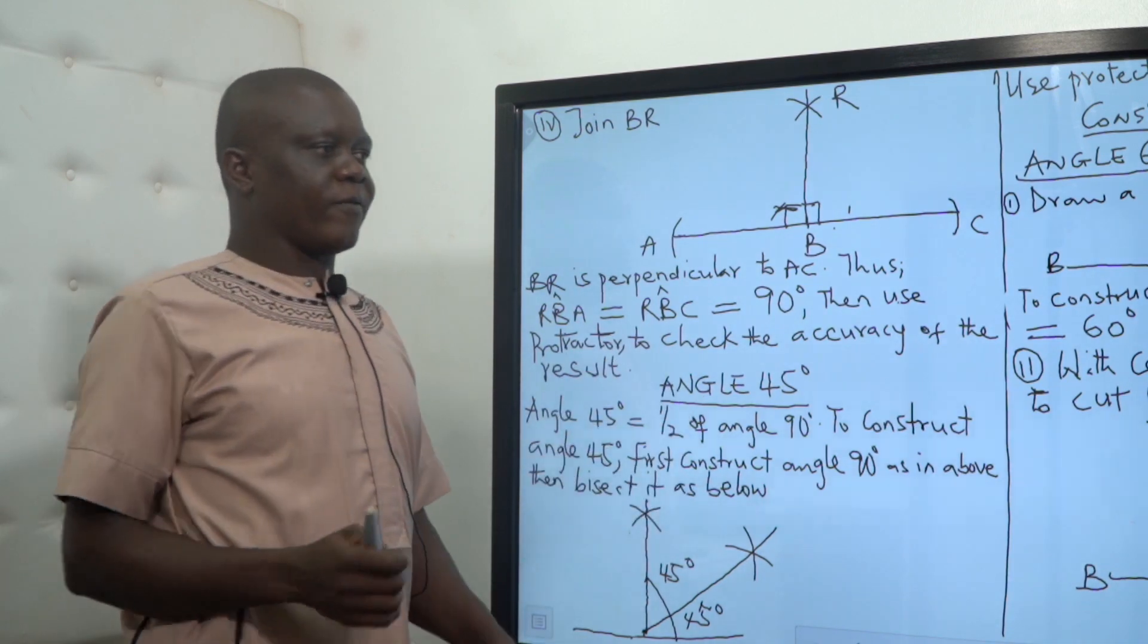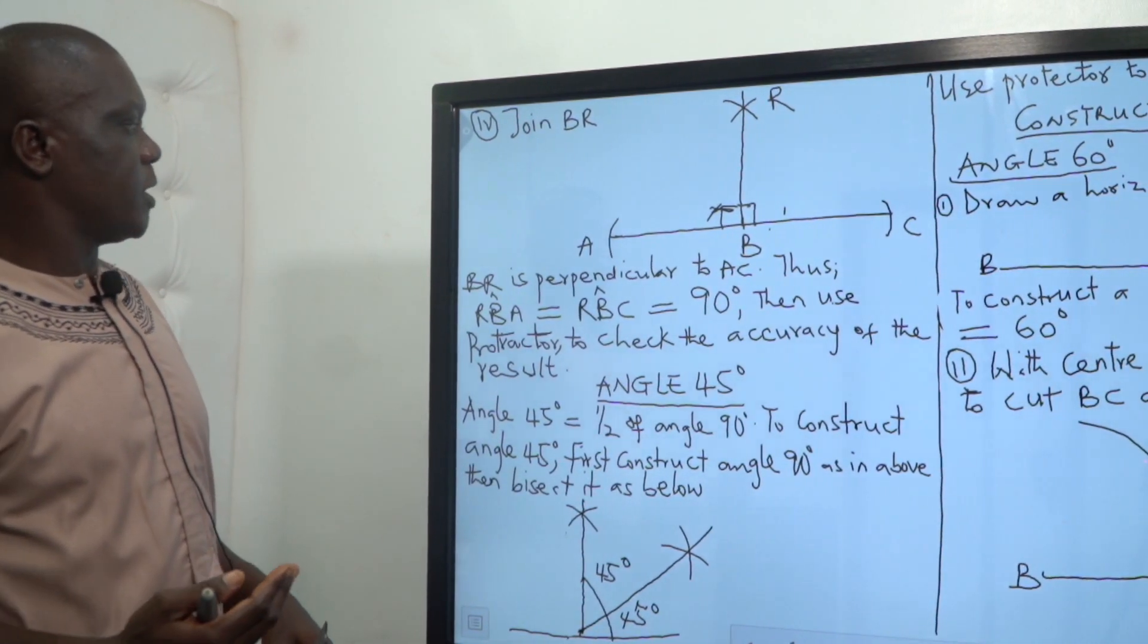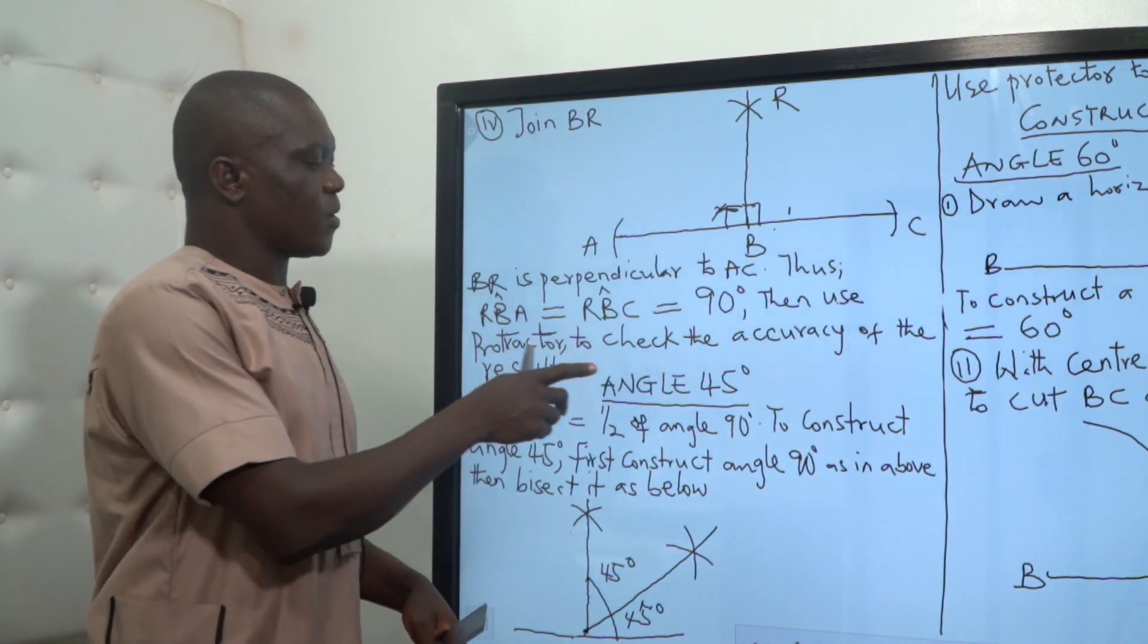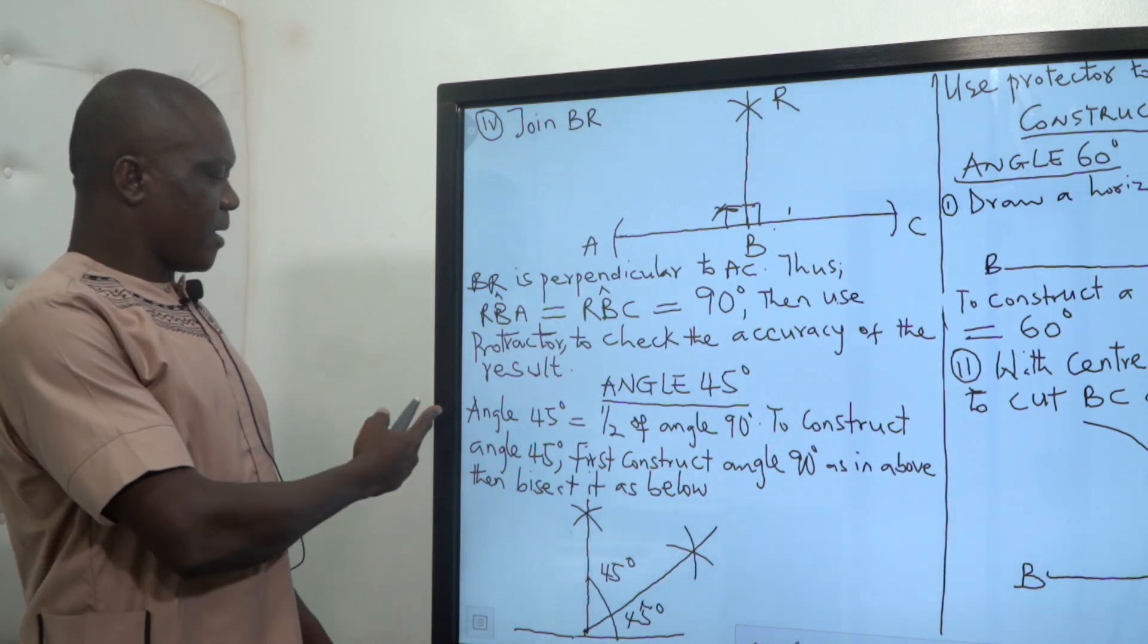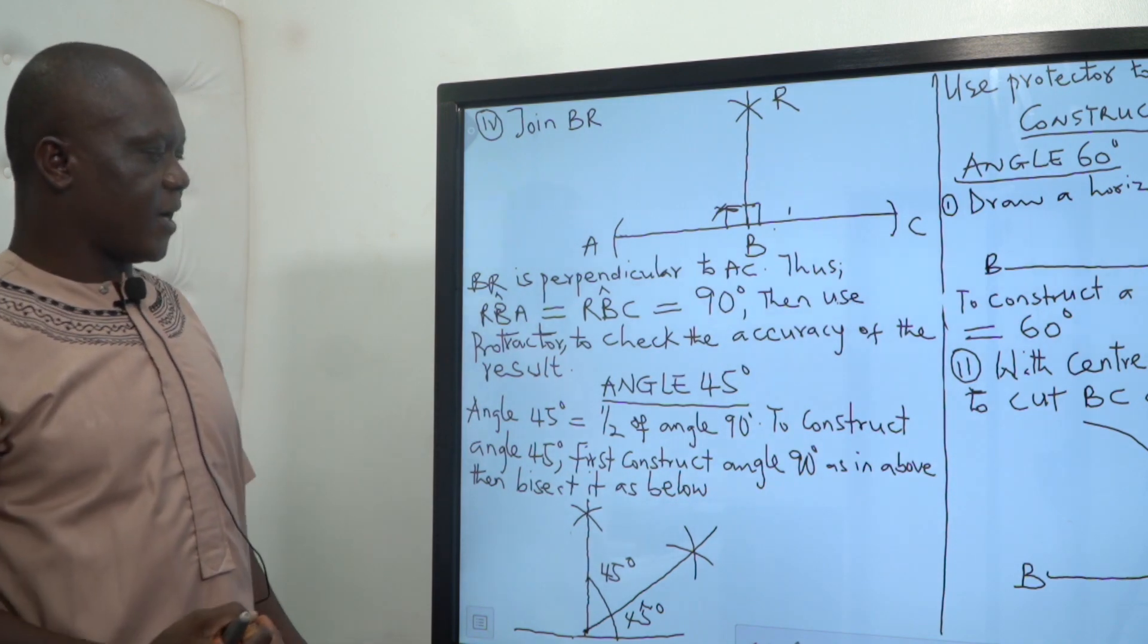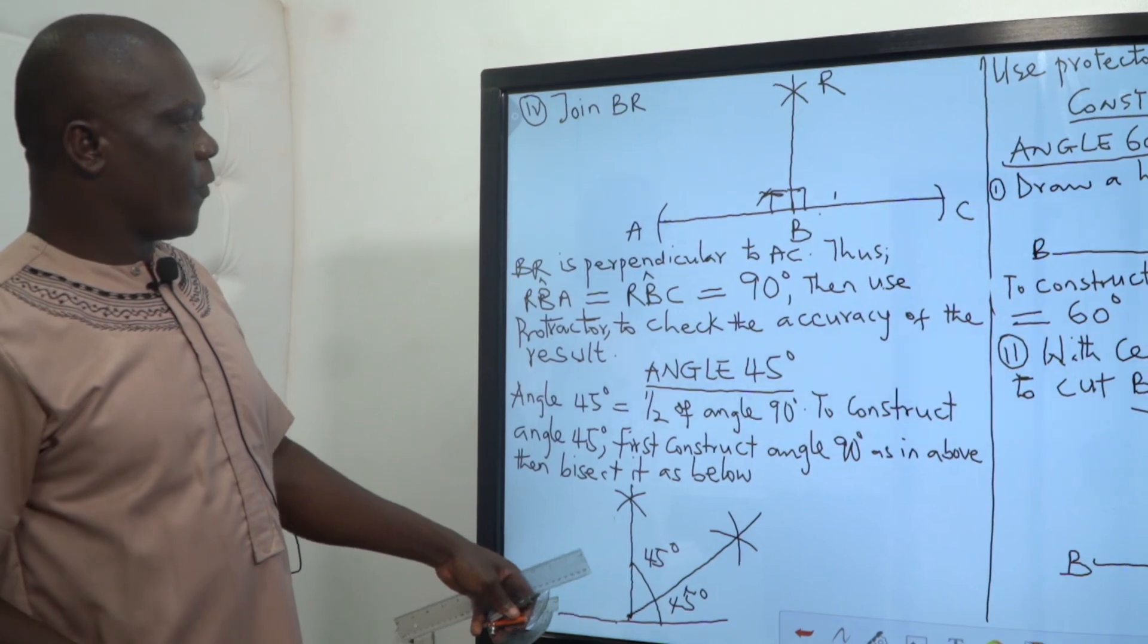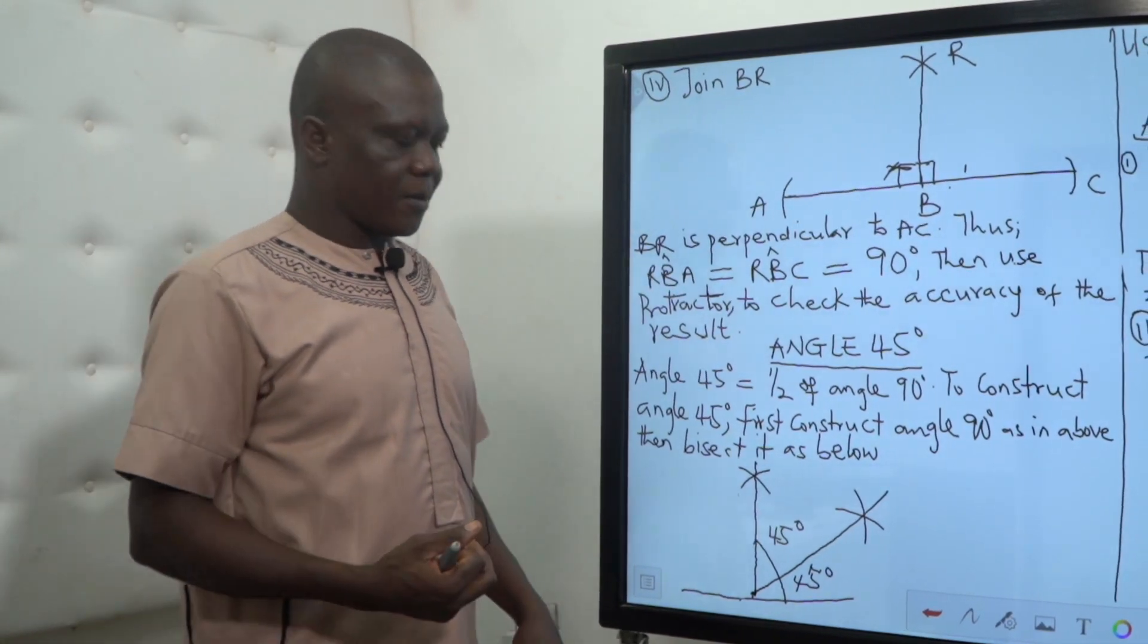Then angle 45. One we now begin to imagine how do we say 90 before 45. The reason is that you cannot construct angle 45 without constructing angle 90, and that's why I said angle 45 is a half of angle 90 degrees. And if you follow the rule or the steps we used in constructing angle 90.